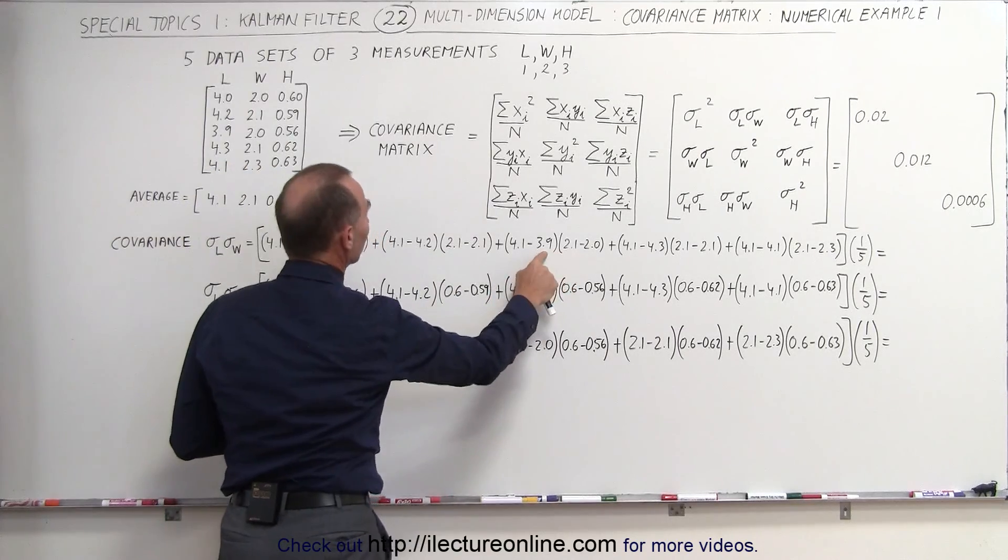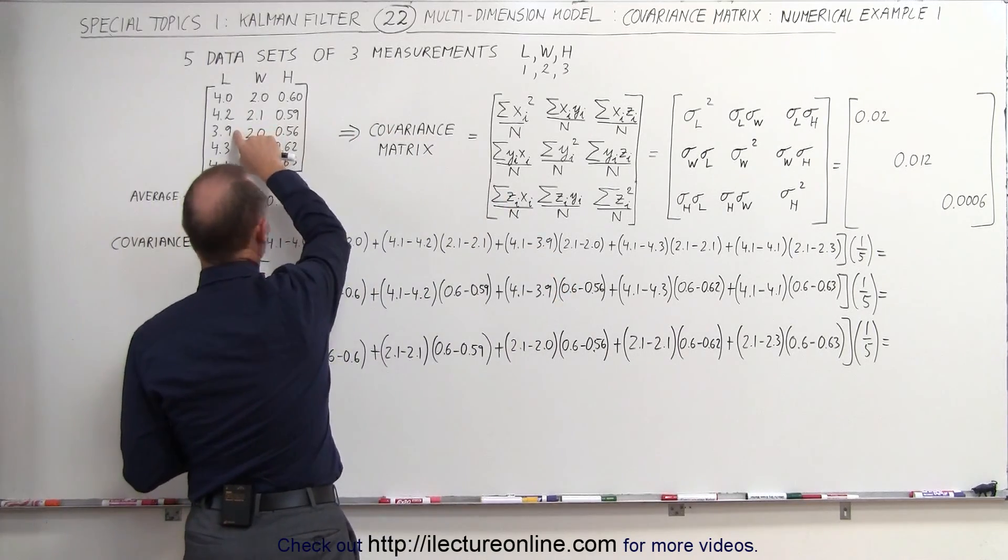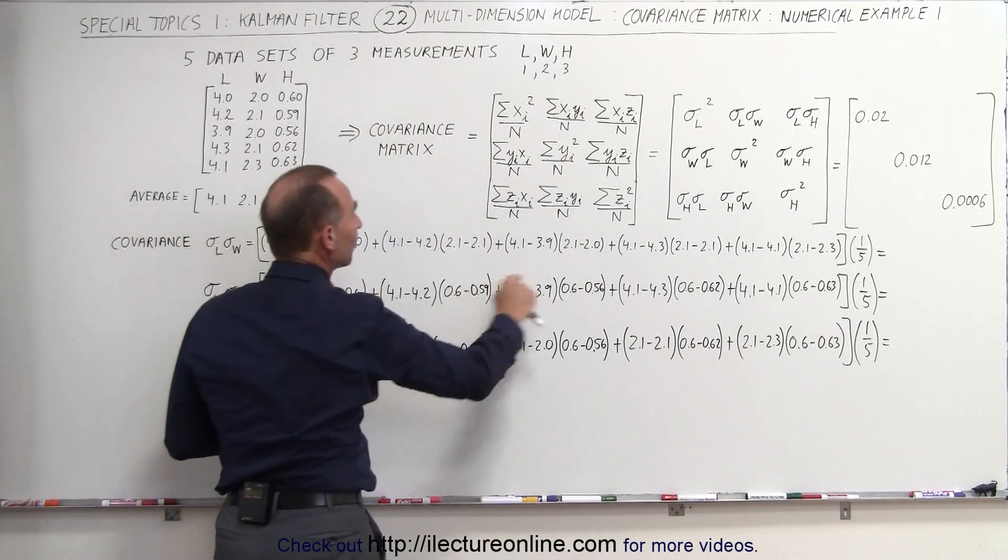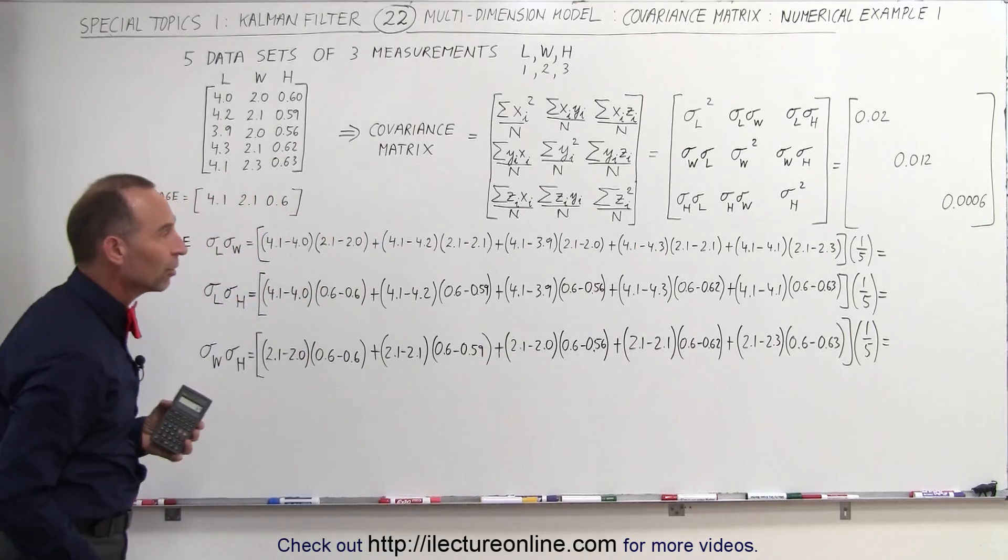Then we go to the third reading, we subtract the 3.9, the length from the average length, and the measured width from the average width and so forth for all five measurements.